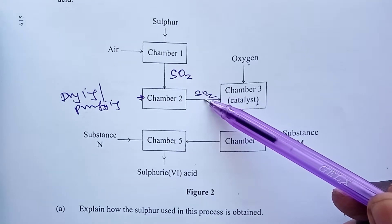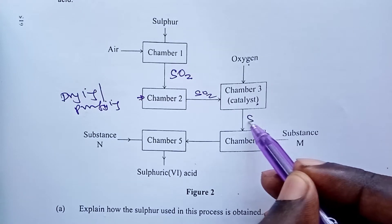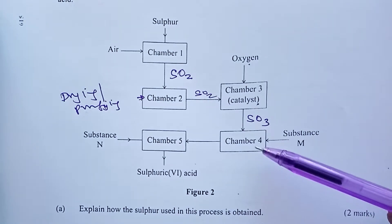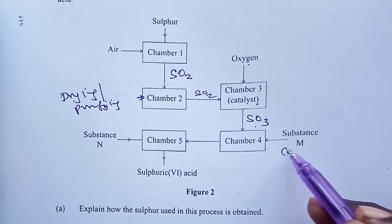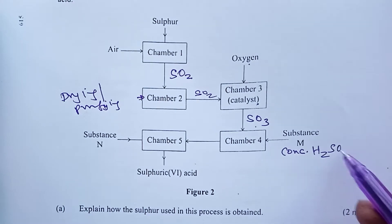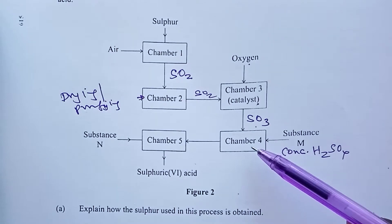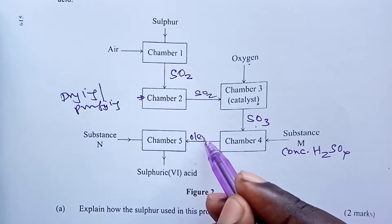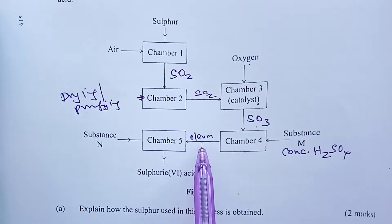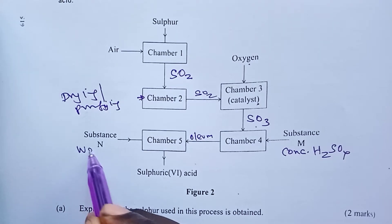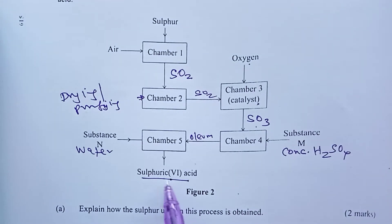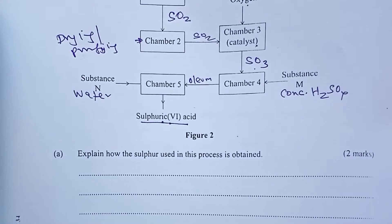When dry and purified SO2 leaves chamber 2, it goes to chamber 3 where we introduce our catalyst and supply oxygen. Sulfur dioxide is catalytically oxidized to give sulfur trioxide (SO3), which then moves to chamber 4. We normally dissolve SO3 in concentrated sulfuric acid to give oleum. Substance M that goes in is concentrated sulfuric acid. Oleum then moves to chamber 5, where we dilute it using substance N, which is water, and finally we obtain concentrated sulfuric acid.